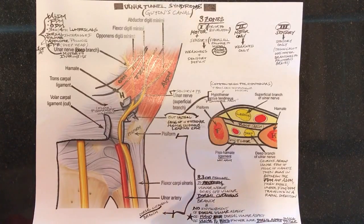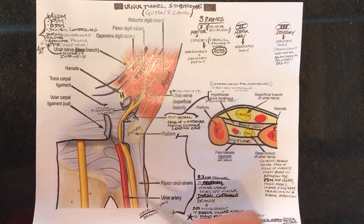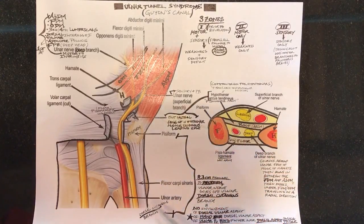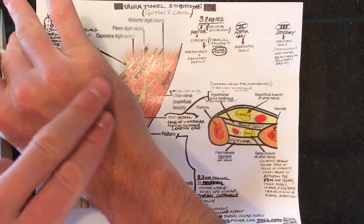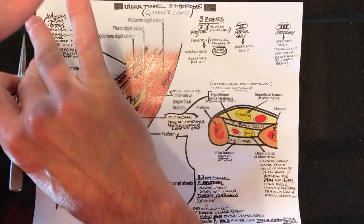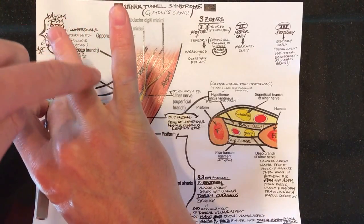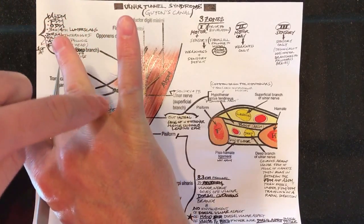Why is this important? Because this does not travel through Guyon's Canal. So you should not have any nerve symptoms related to this branch that comes off. The dorsal cutaneous branch innervates the dorsal aspect of the hand, the dorsal aspect of the small finger, and the dorsal one half of the ring finger.